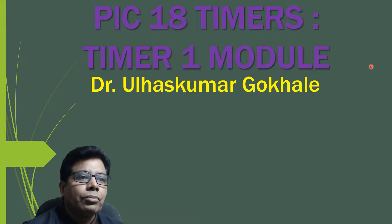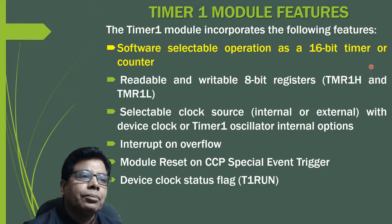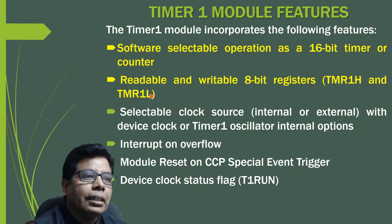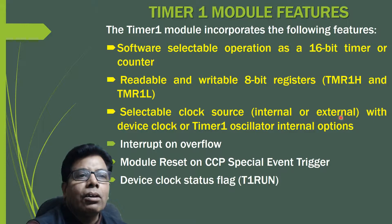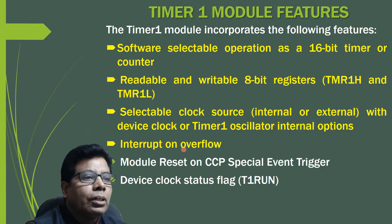Let us start with the features. Timer 1 module incorporates the following features: software selectable operation as a 16-bit timer or counter, readable and writable 8-bit registers TMR1L and TMR1H, selectable clock sources internal or external with device clock or Timer 1 oscillator, and interrupt on overflow — whenever there is an overflow it will interrupt the microcontroller.